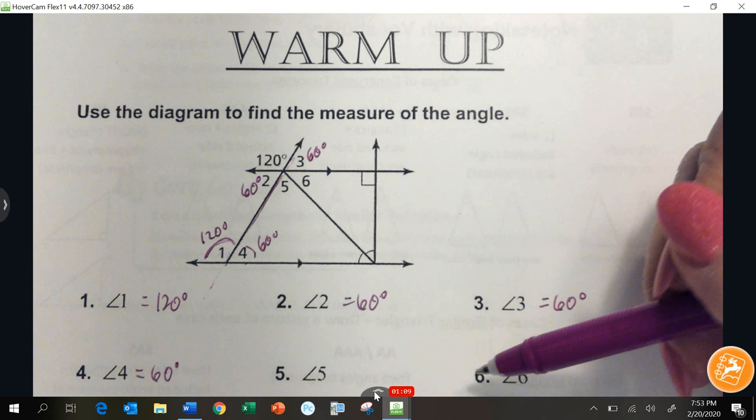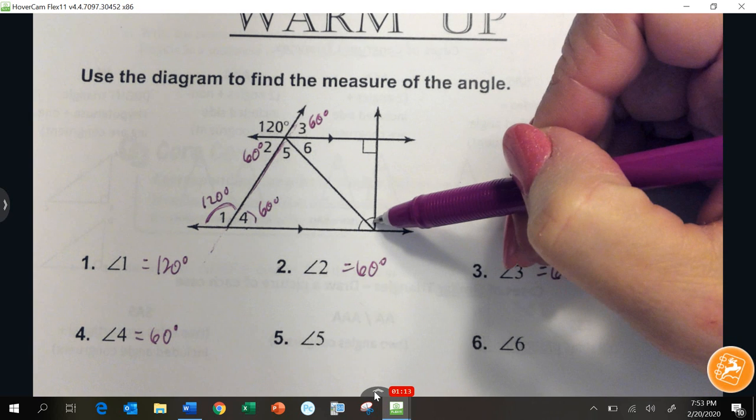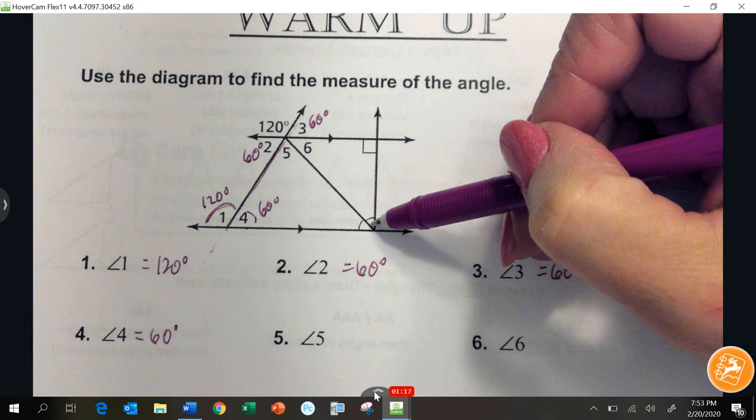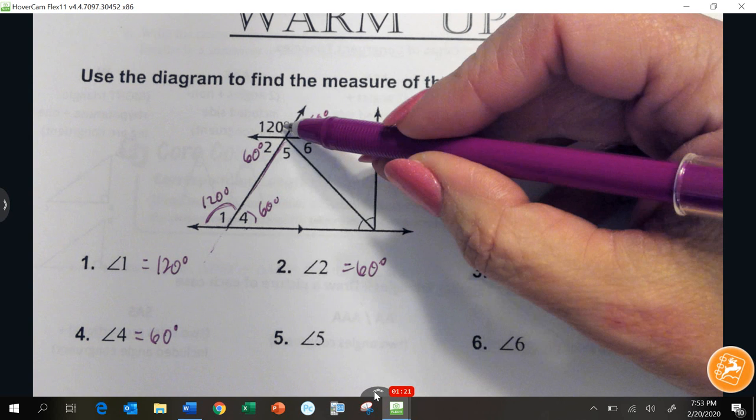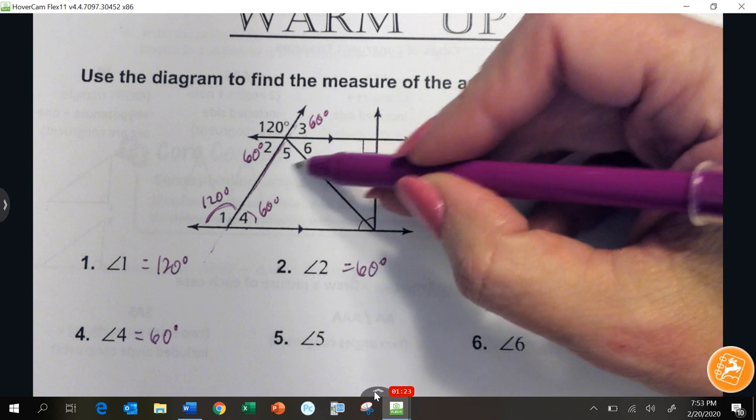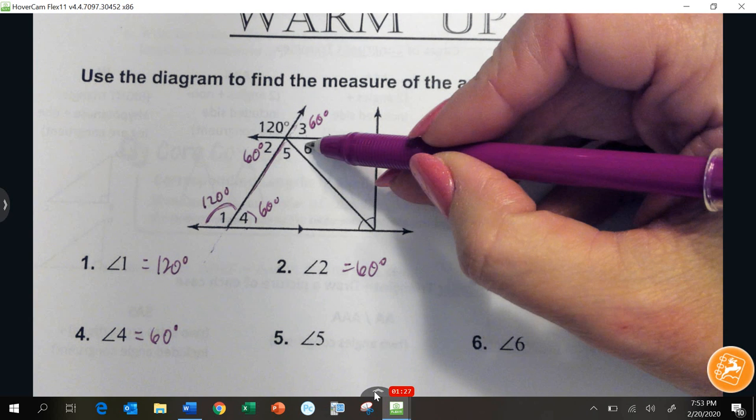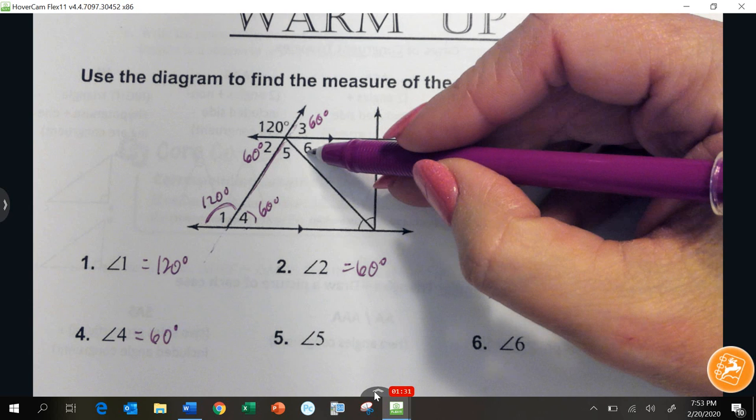Now angle 5 and angle 6 were a lot trickier. These over here are marked congruent, so that is kind of where my eye went looking. I knew that 5 and 6 together had to equal 120 degrees because they are vertical angles with 120. This has to be congruent, but I did not have any evidence that they're the same measurement themselves.